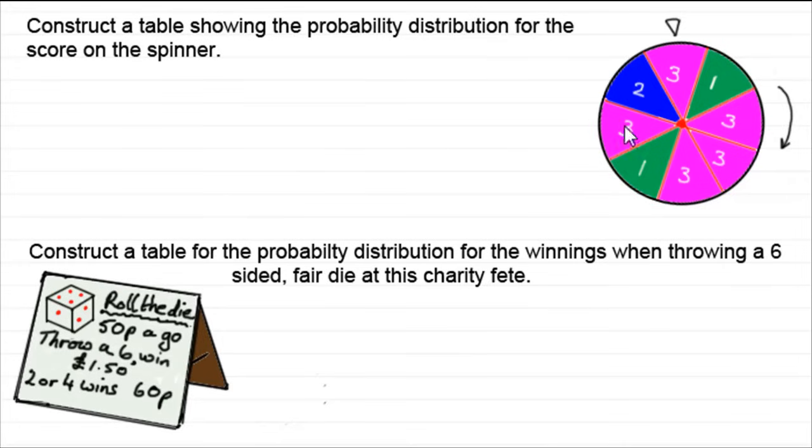Like for instance in this first example we can measure the score on this spinner. We've got a wheel here which is spun round and the score is the number that is below this pointer here. And we can measure that exactly. We know that we're going to get either a 1, a 2 or a 3.